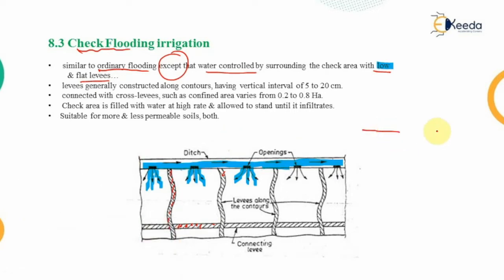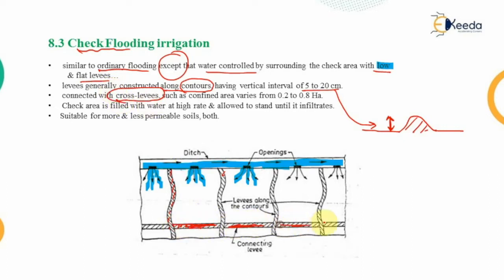Looking at the cross-section, these levees are generally constructed along the contours — that is, lines passing through points of equal elevation — with a vertical interval of 5 to 20 centimeters. These levees are connected with cross levees, also called connecting levees, which run transverse to the main levees. The confined check area is between 0.2 to 0.8 hectare.